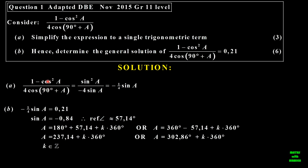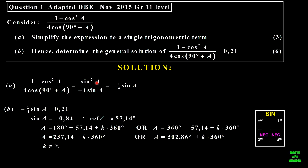So here we can see we've simplified it: 1 minus cosine squared, use the identity sine squared, cosine of 90 is a co-ratio that gives me negative 4 sine, and the sine cancels with the sine squared there, and I get a negative quarter sine a. Now we take the negative quarter sine a equated to 0.21. Transpose the negative quarter to the right side, so I get sine a equal to negative 0.84.